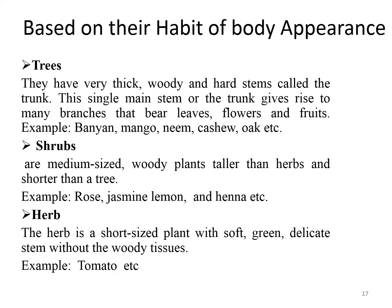Classification based on habit of body appearance: trees are big and tall plants with a very thick, woody, and hard stem called the trunk. They have only one main stem which bears leaves, flowers, and fruit. The lifespan of trees spans several years; banyan and mango are examples. Shrubs are medium-sized woody plants, taller than herbs and shorter than trees. Their features include a bushy, hard, and woody stem with many branches. Rose, jasmine, and lemon are common shrubs.